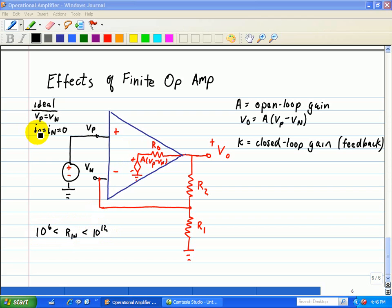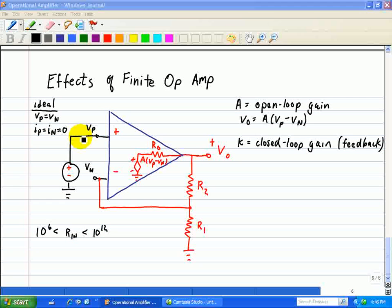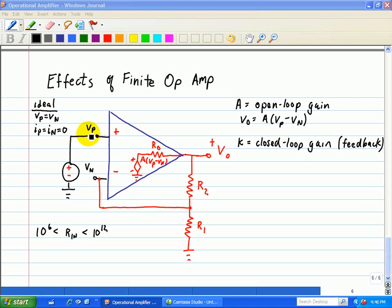And for an ideal case, when the resistance is infinite, the input resistance, that implies that IP, the current going to the non-inverting input, is equal to IN, the current going to the inverting input, is equal to zero. And we know that VP is equal to VN only when there's an infinite gain associated with the ideal op-amp.